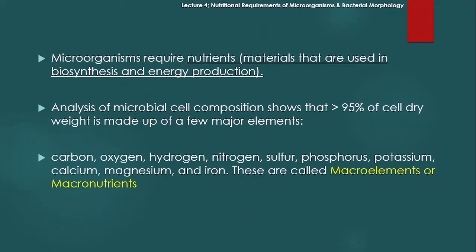Microorganisms require nutrients. And what are nutrients? Nutrients are materials that are used in biosynthesis and energy production. So microorganisms can be used in biosynthesis and energy production. Biological molecules can be used in biosynthesis. And now cell dry weight is made up of few major elements.